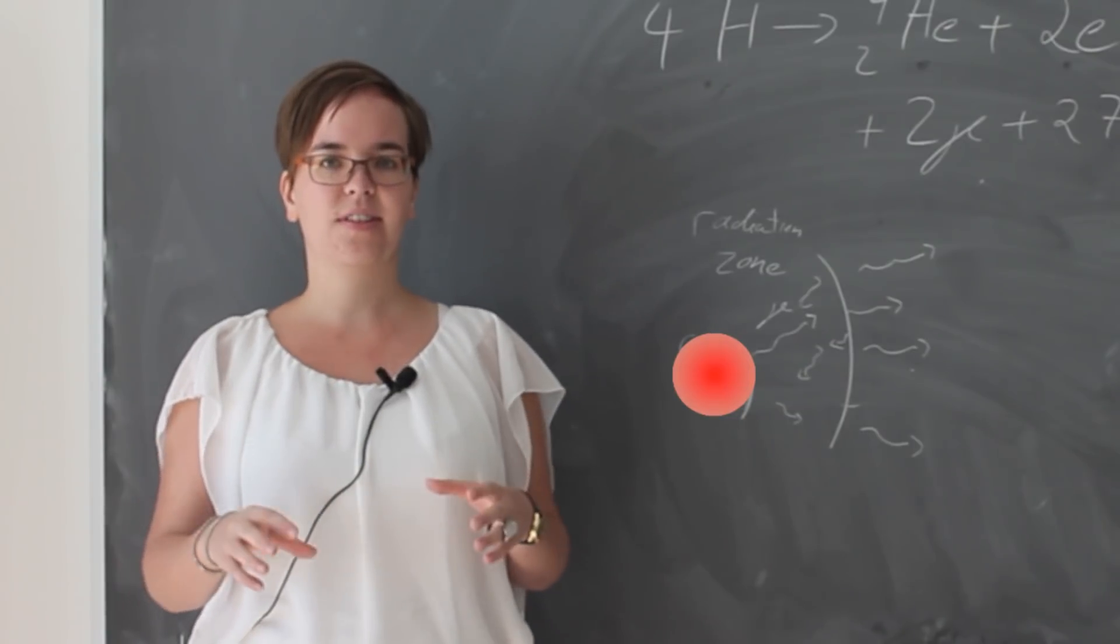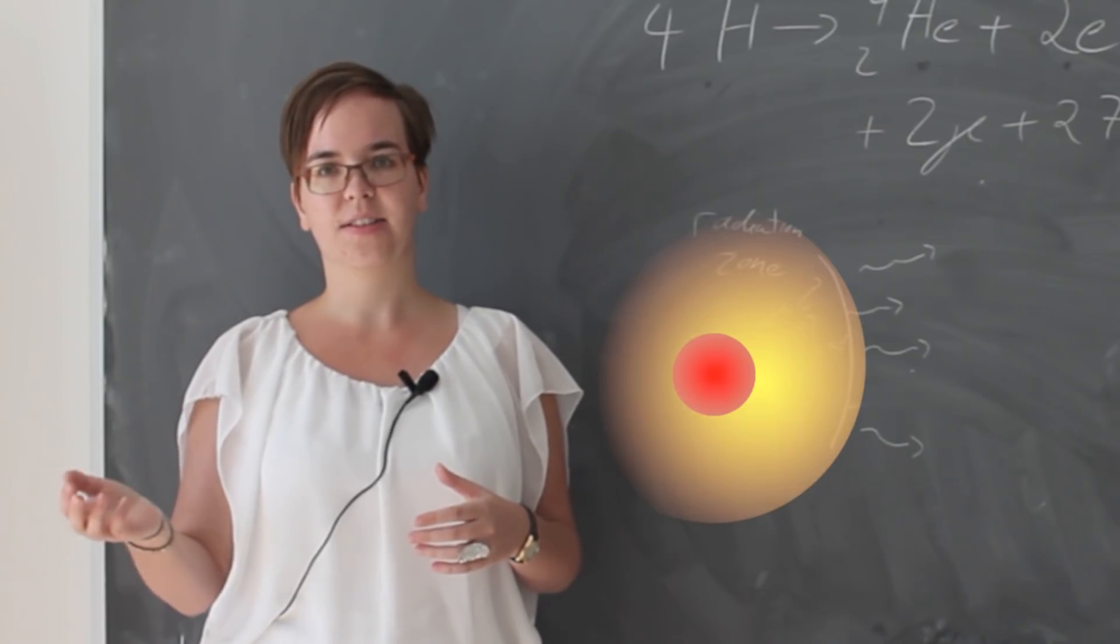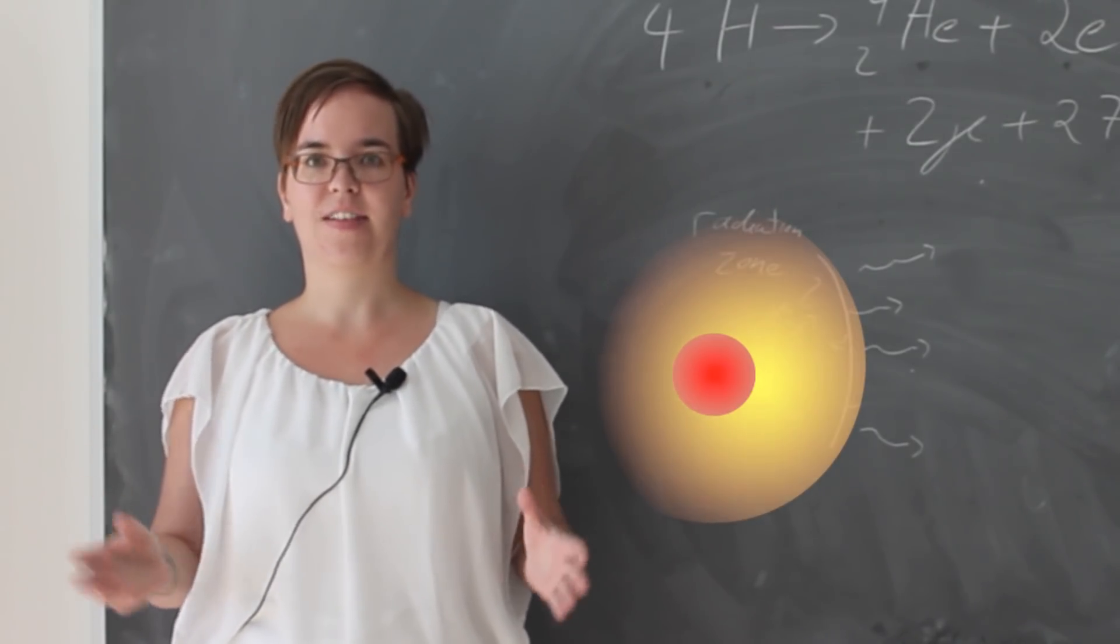Once the photons are produced in the center of the Sun, they start heading in the direction of the surface of the Sun through the radiation zone, but also in this zone the density is very, very big.